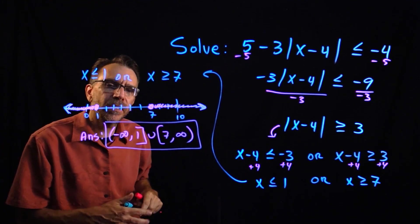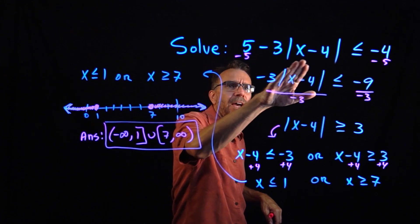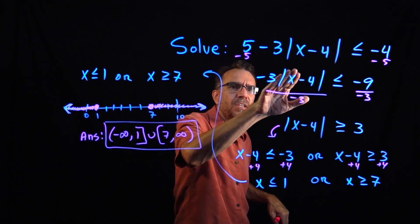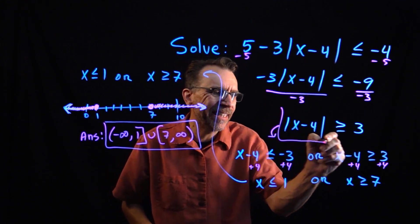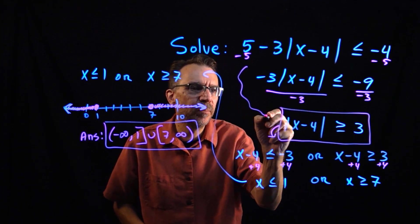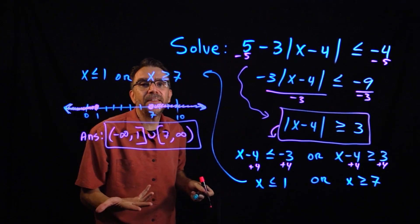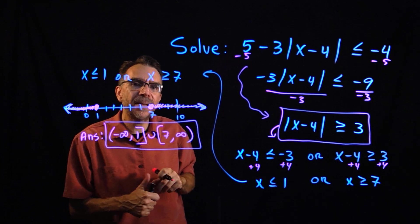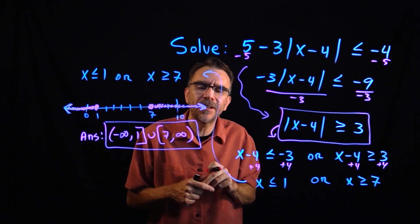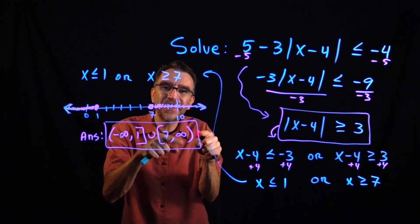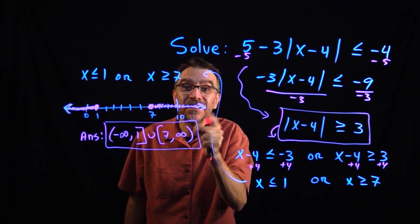Just be a little careful — when you have multiple operations, the first step is to isolate the absolute value before you apply the theorem. Watch out for that, and that should get you going on absolute value inequalities. Don't forget to hit the like button — thank you and good luck!